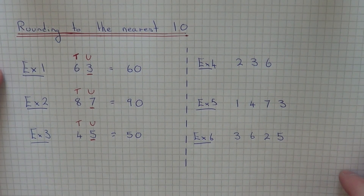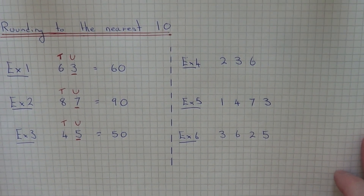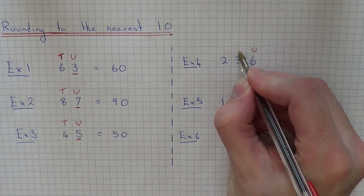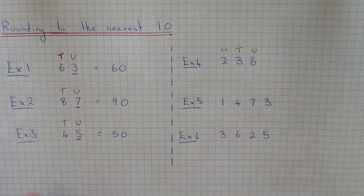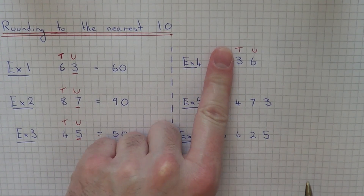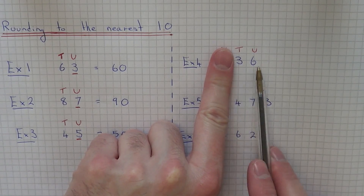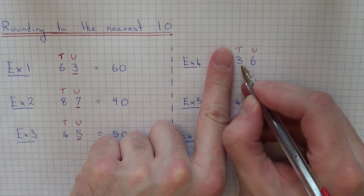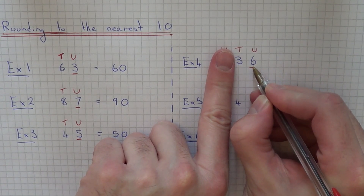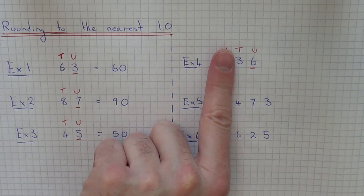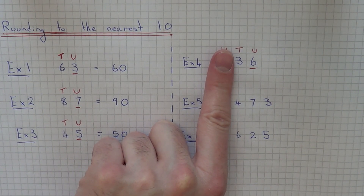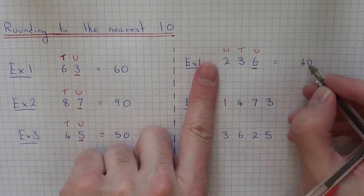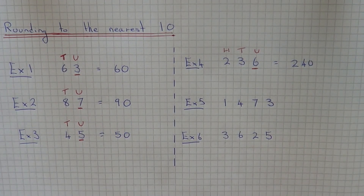Let's move on to some harder examples. Example four — this time we've got two hundred and thirty-six. We need to look at our tens column. We can forget about the hundreds to start with. If we just look at the last two numbers, we have three tens, so there are two possible answers — it will either be thirty if we round it down, or forty if we round up. Look at the number after the tens column, which is six. Since this is five or above, we're going to round the number up to forty. Remember to copy the hundreds before it, so it's two hundred and forty to the nearest ten.